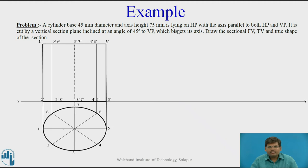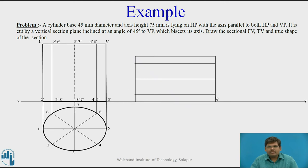Moving on to the second stage, the cylinder is lying on HP with the axis parallel to both HP and VP. When the axis is parallel to both HP and VP, it will be seen as a line view in both the front view and top view. So in the first condition, we need to tilt the first-stage front view in such a way that phi'-phi' coincides with the XY line. This gives us the second front view where the axis is parallel to both HP and VP. This condition is satisfied that the cylinder lies with the axis parallel to both HP and VP.